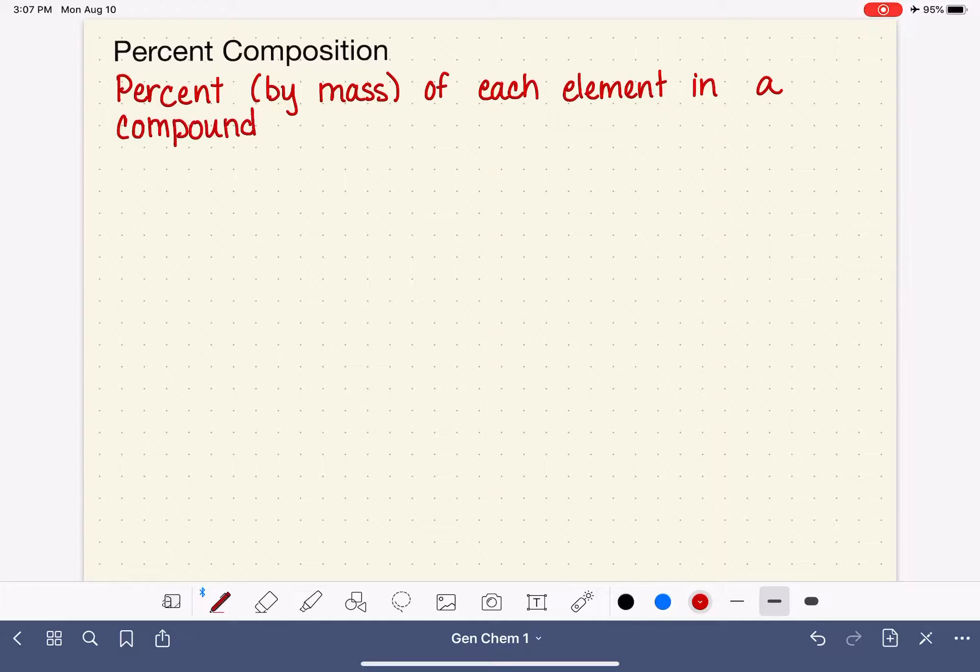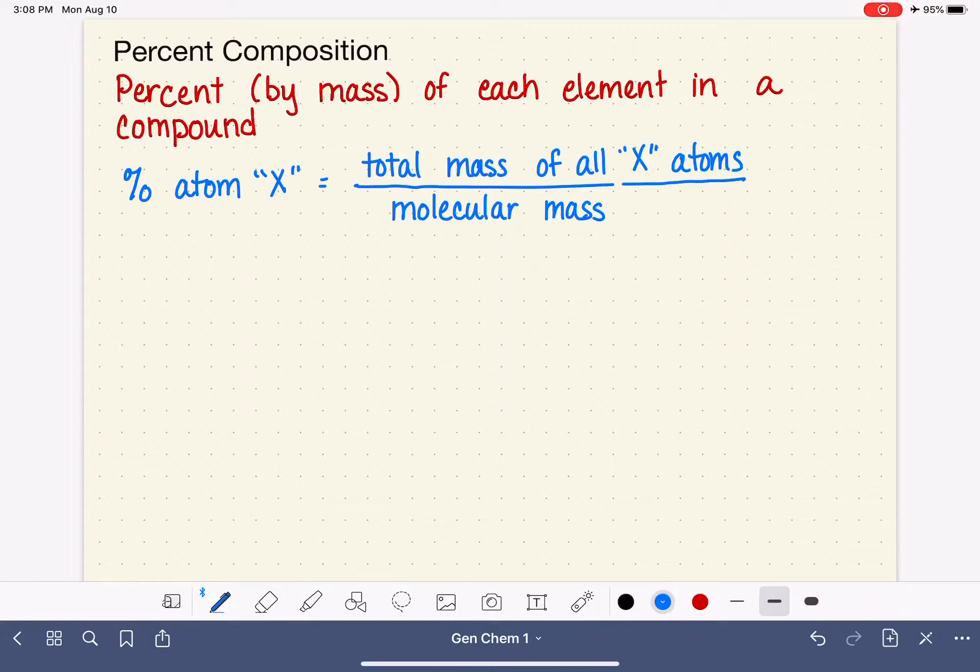The formula for calculating percent composition looks a little bit weird until you see it used in an example. If we wanted to calculate the percent of mass of atom X, we're going to determine the total mass of all the atoms X in whatever compound we're looking at, and divide that by the molecular mass of the whole entire compound. Then to make it a percent, we simply multiply by 100 and that turns it into a percentage.